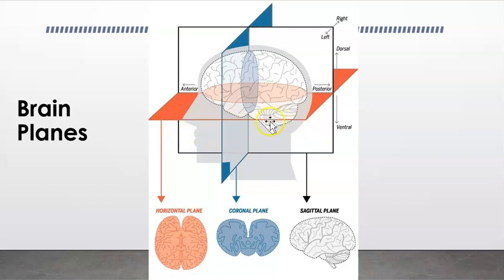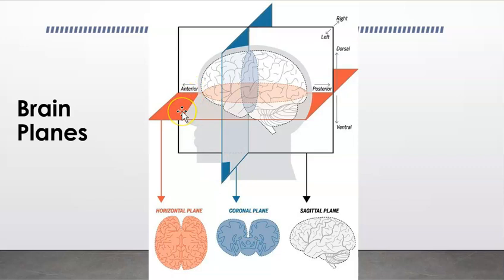With a horizontal plane, you can go from down to up and get multiple different cuts. Now the next one is the coronal plane. This is like if you're looking at something straight on from the front. So if you were to look at someone straight on from eye to eye, and if you were able to see into their brain, then what you'd be seeing is this coronal view.